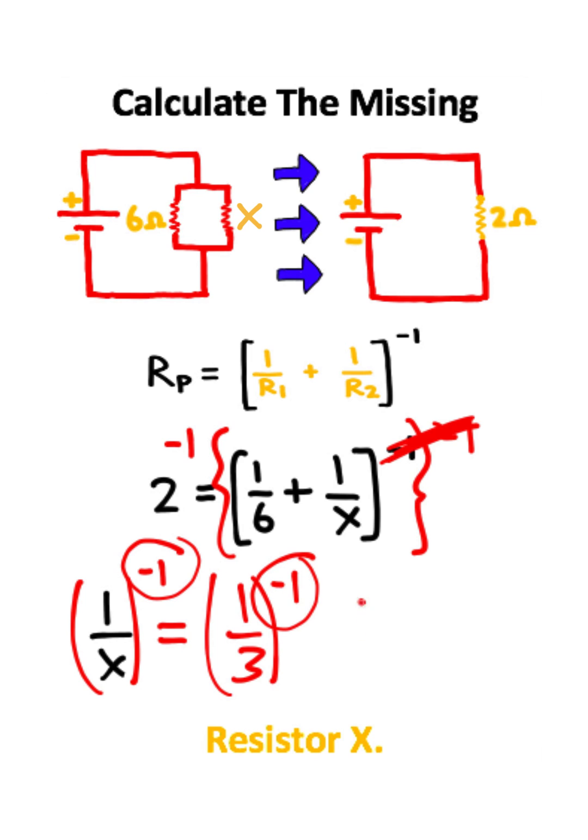And if we flip both the fractions that will give us that X is equal to 3. So resistor X has a resistance of 3 ohms.